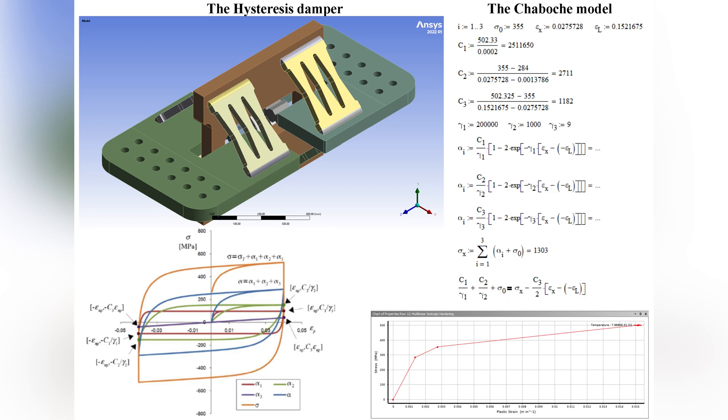Steel hysteresis lamellas are modeled using the Chiboku model materials, which is a two-surface model for describing cyclic behavior.